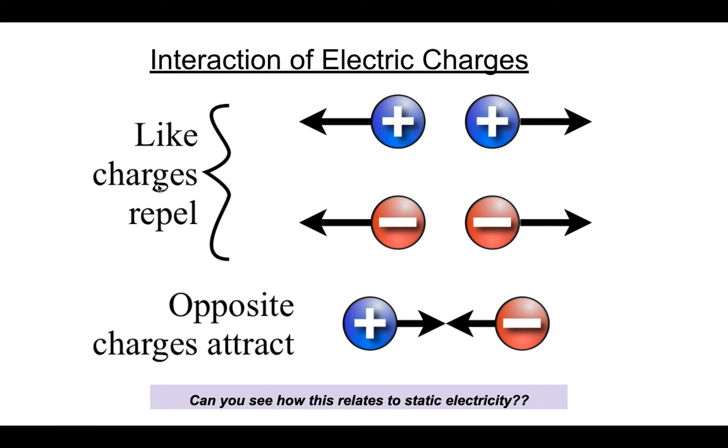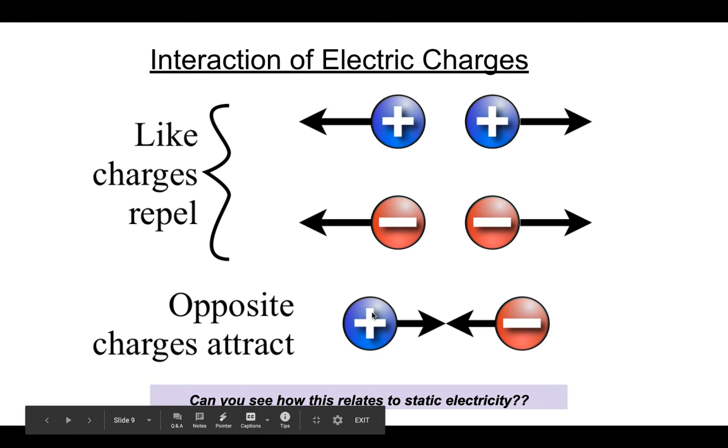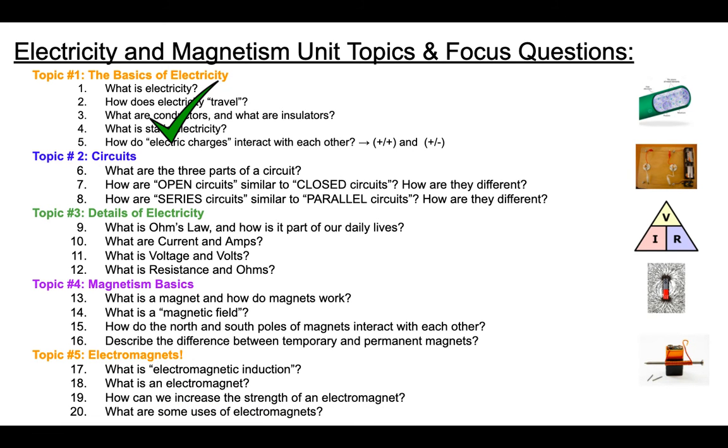Okay. So interaction of electric charges. It's good to remember just the basics. Like charges repel each other. So a positive will push away from another positive, meaning repel. A negative will repel another negative. And then opposites attract. So positives and negatives attract. All right.